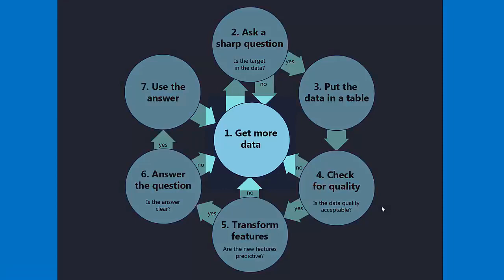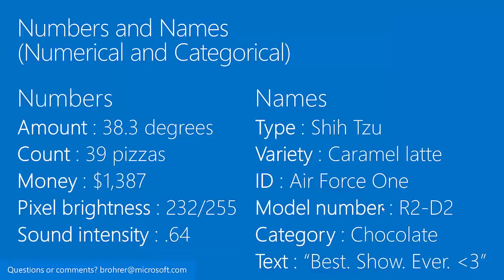The very first step is to get data. And if you have data, get more data. When I say data, I mean numbers and names — data that's numerical and categorical.